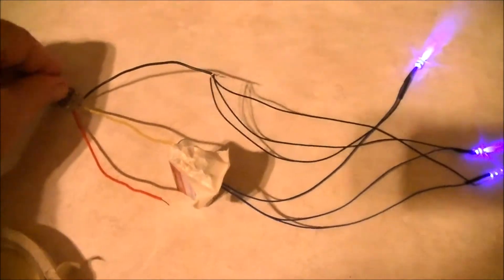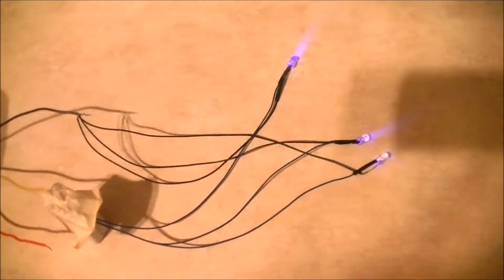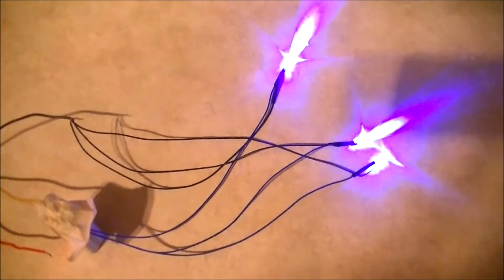Here you see I've got the battery hooked up, and I'm using the potentiometer to control the dimness and brightness of the LEDs. It's that simple.